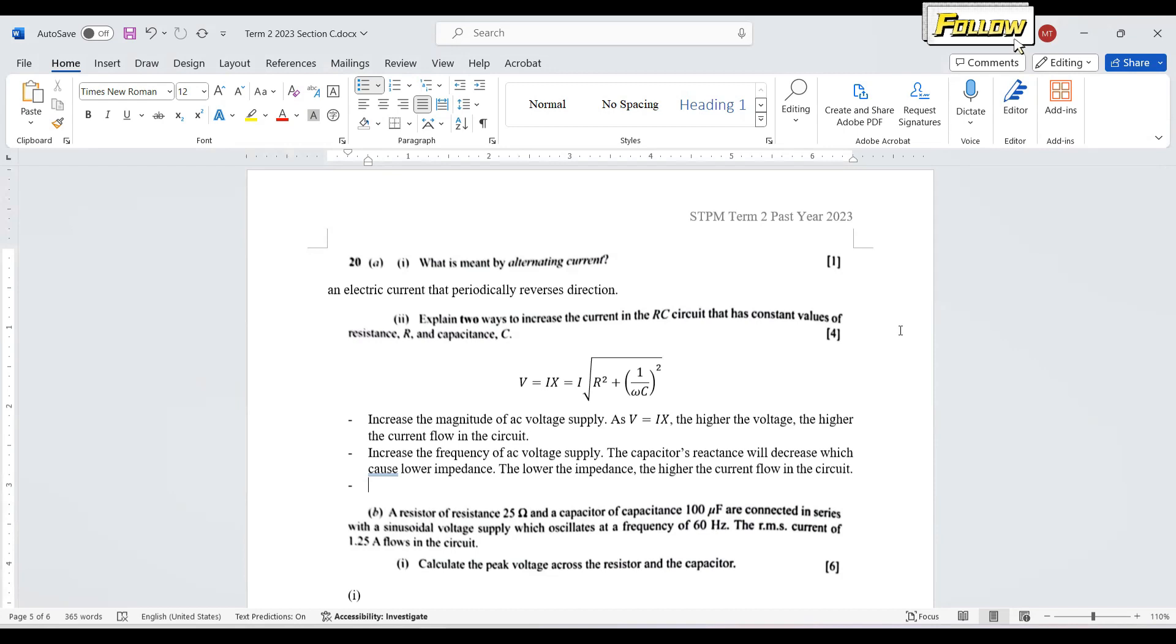First one is we can change the V, the magnitude of the AC voltage supply. Because by looking at the formula V equals Ix, the higher the voltage, the higher the current flow in the circuit. For four marks, we need to explain a little bit on the method.